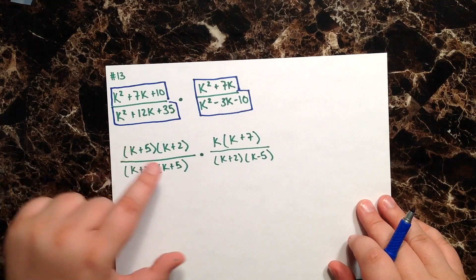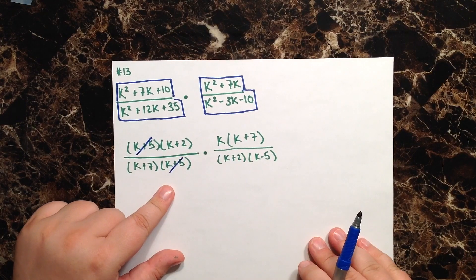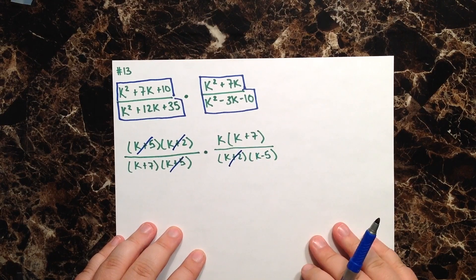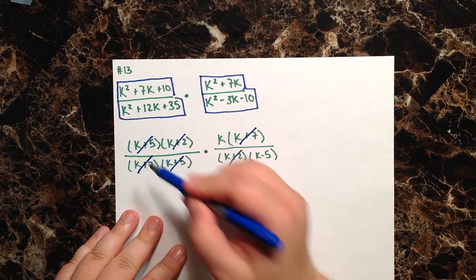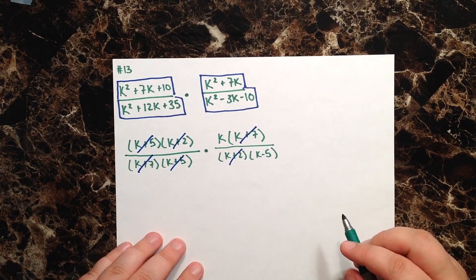I have a k plus 5 up here and I have a k plus 5 in the bottom, so these go away. I have a k plus 2 and a k plus 2, that goes away. I have a k plus 7 and a k plus 7, that goes away. And it looks like that is all I can cancel out.